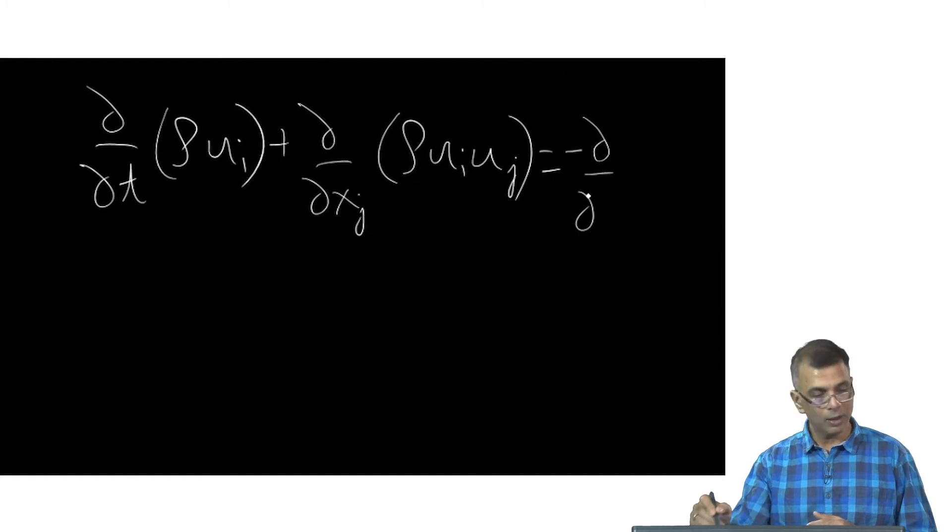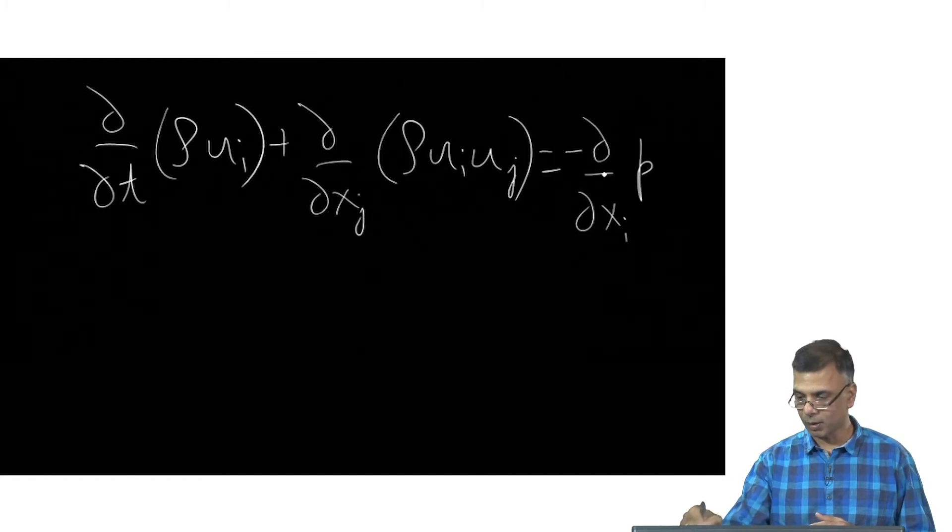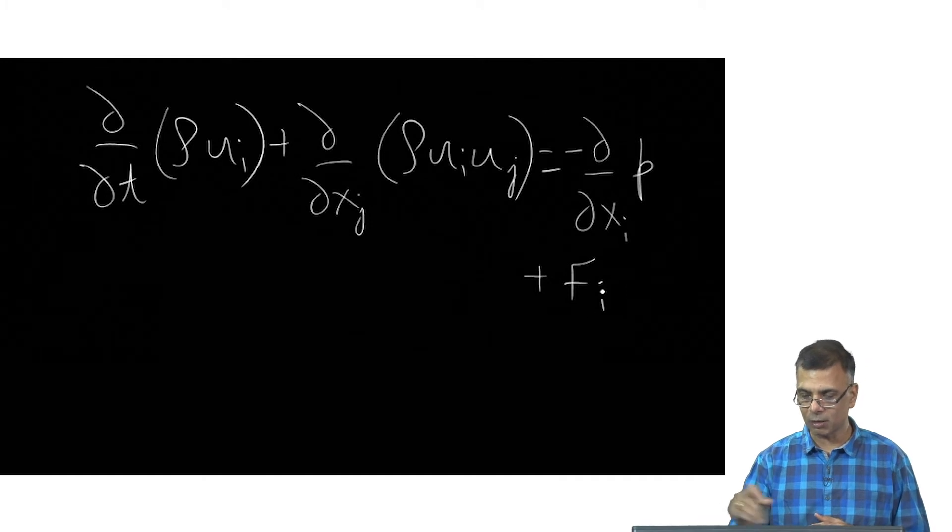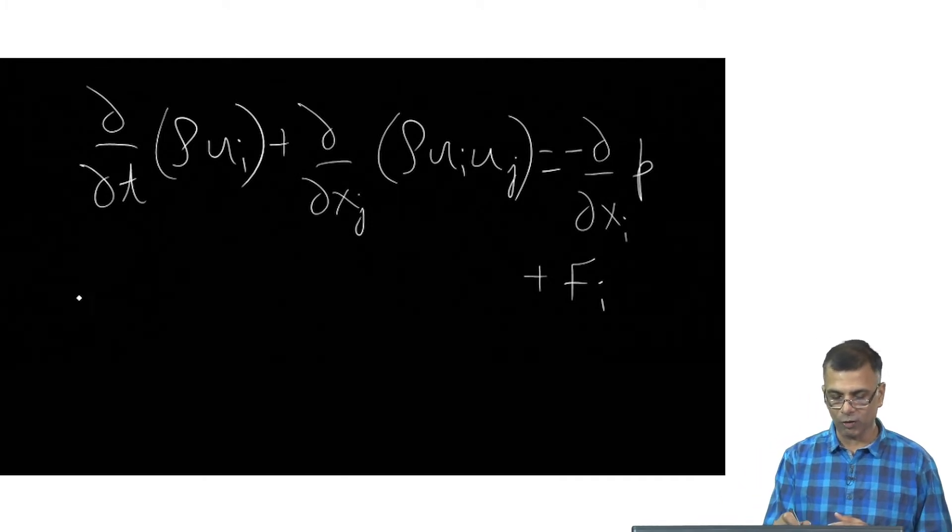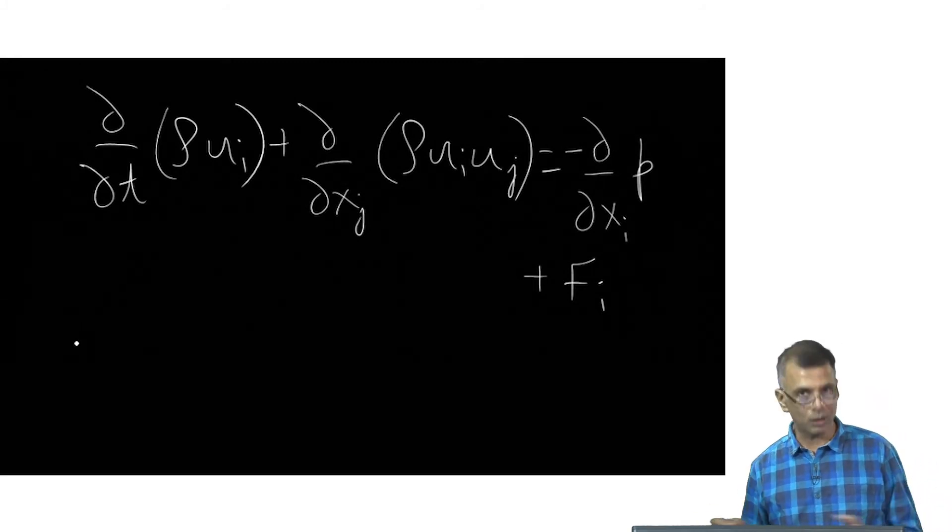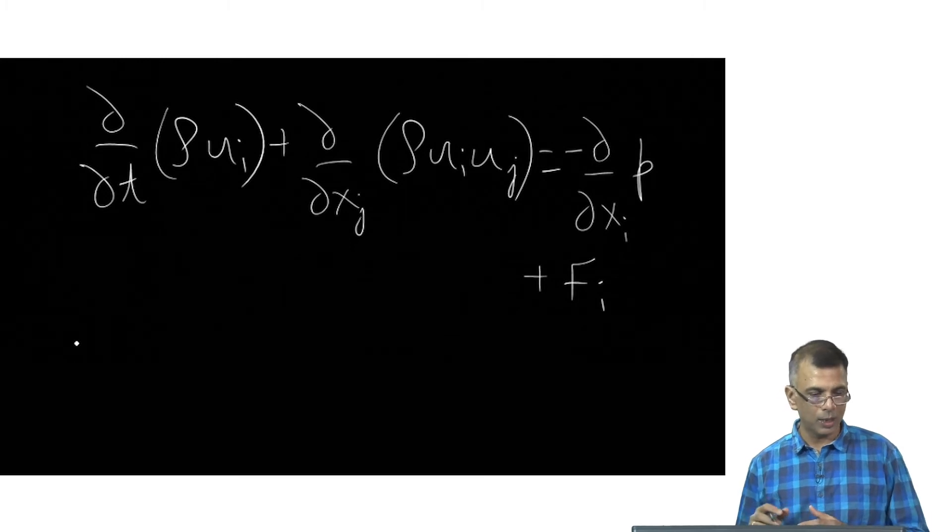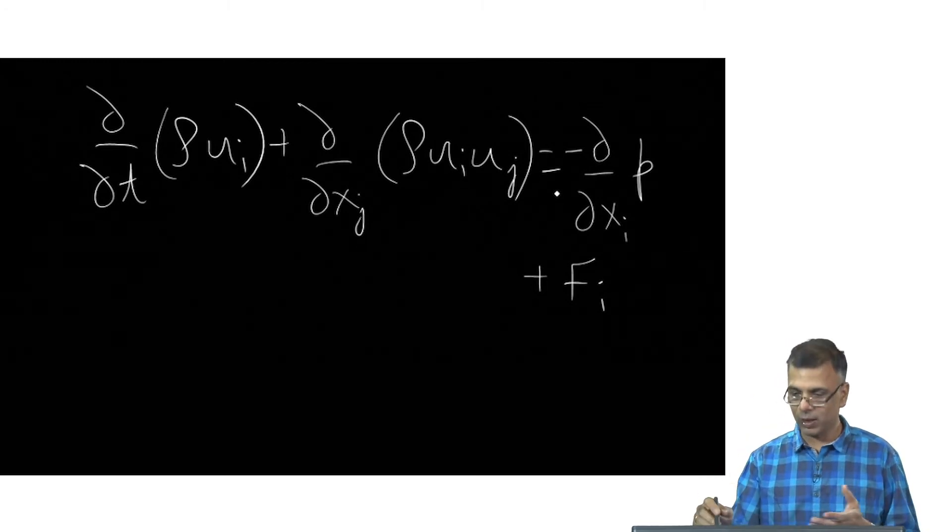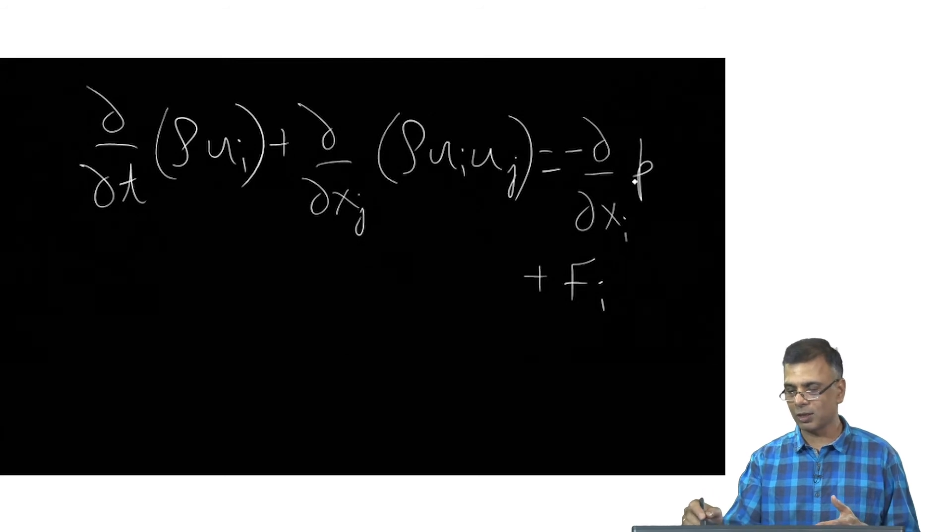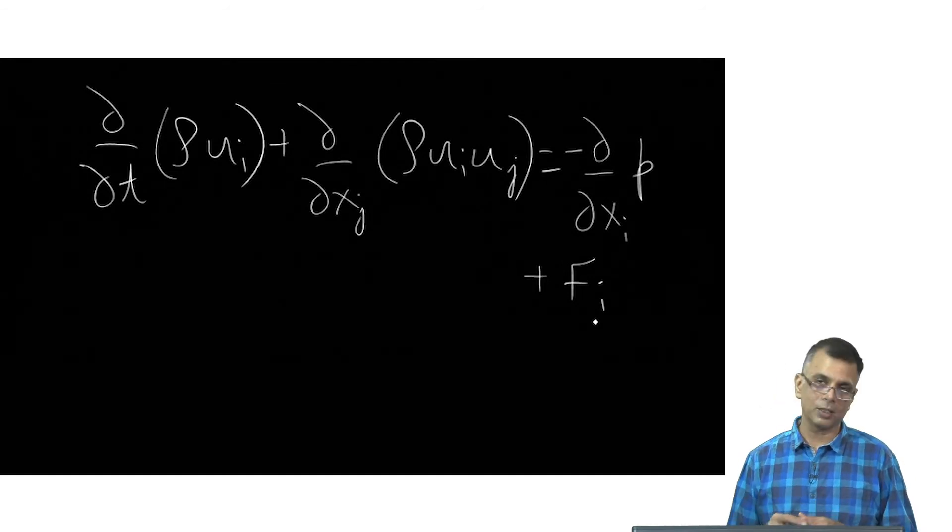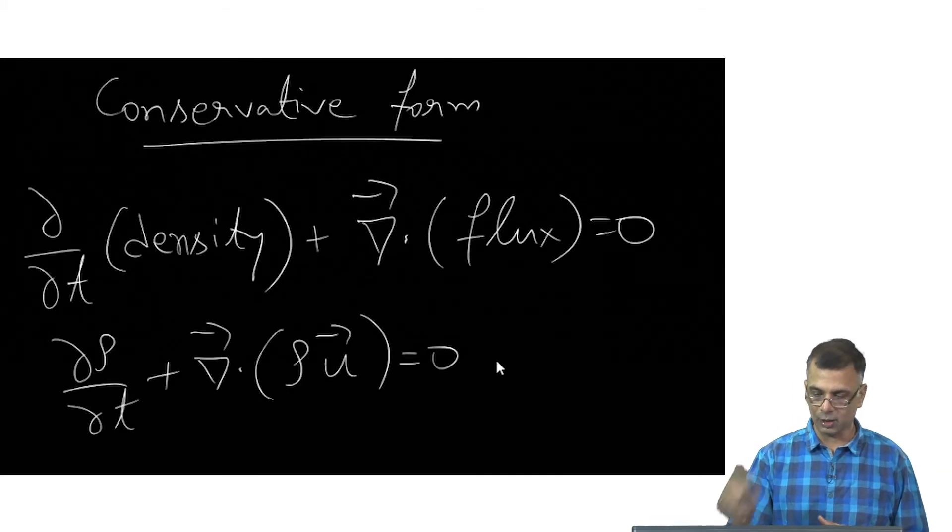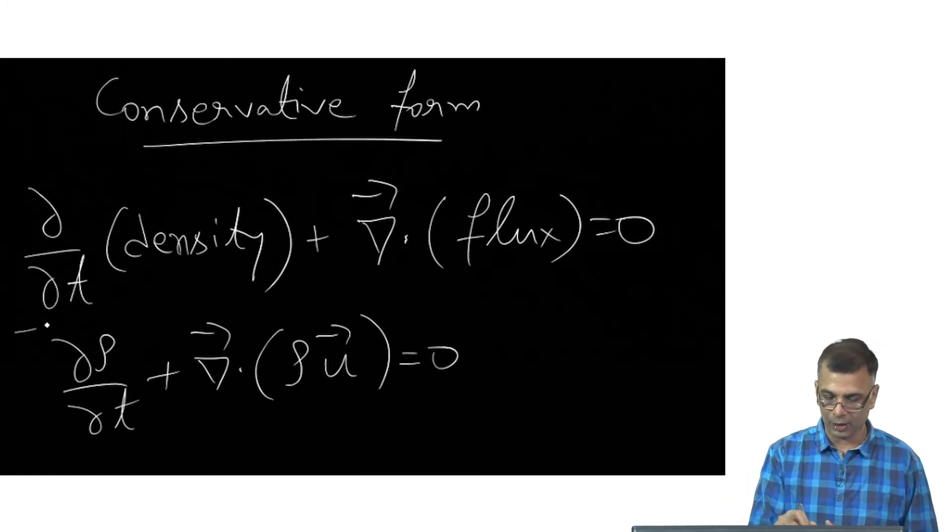now this is divergence, essentially what we are writing here is divergence of rho u u. We sometimes wrote this as an outer product. This is the same thing, is equal to, if we neglect viscosity, this would be the gradient of the pressure and this would be any external body forces. So this would be the conservative form of the momentum continuity equation, and same thing.